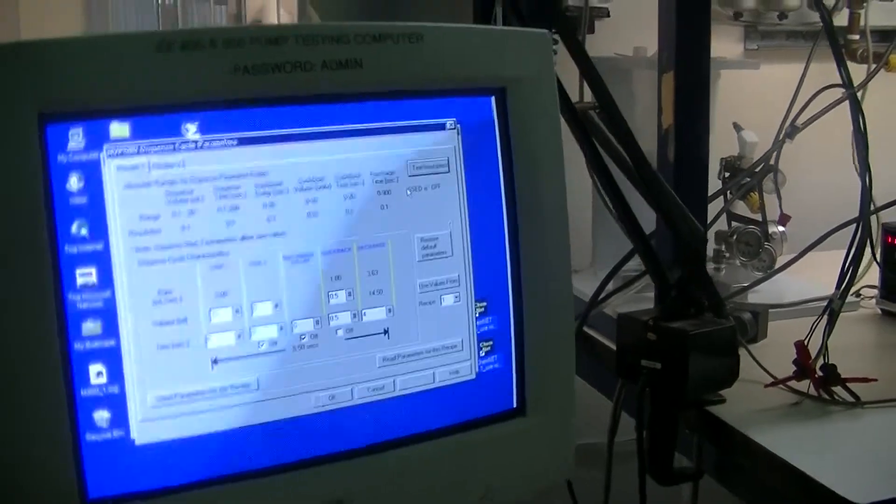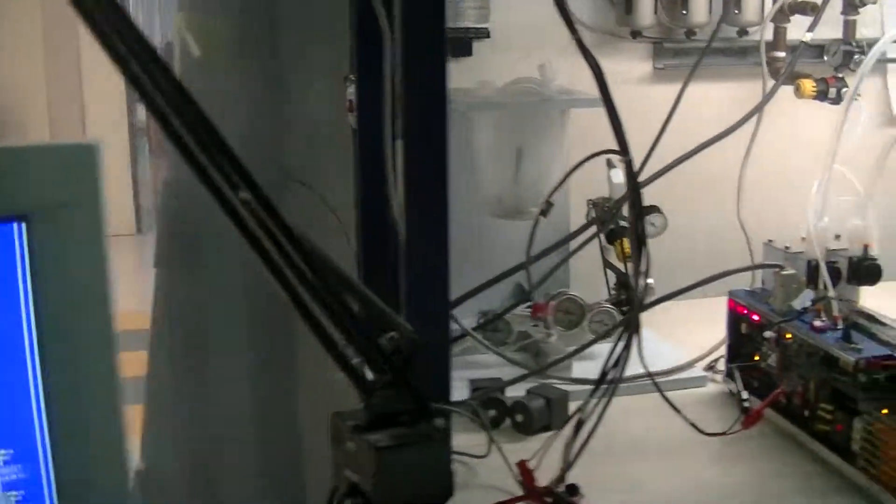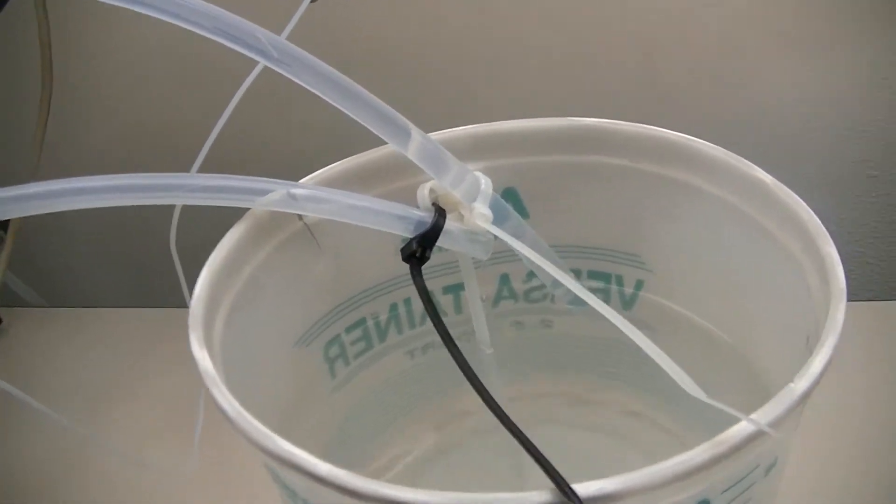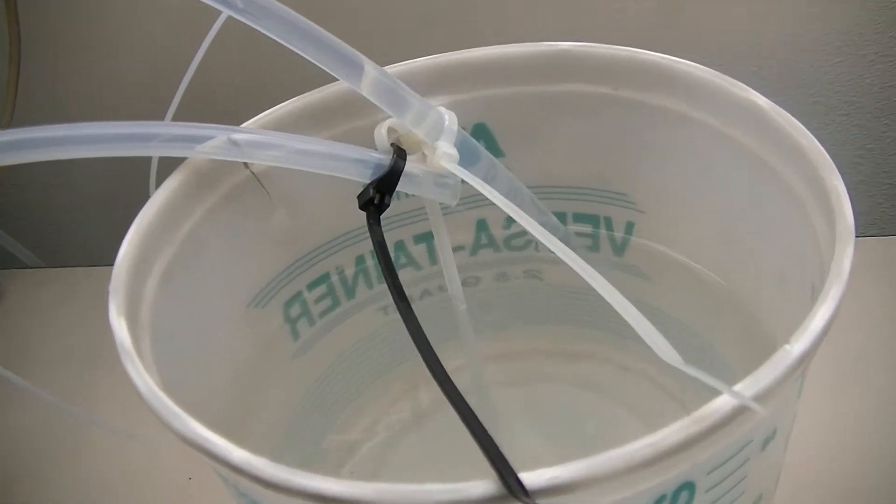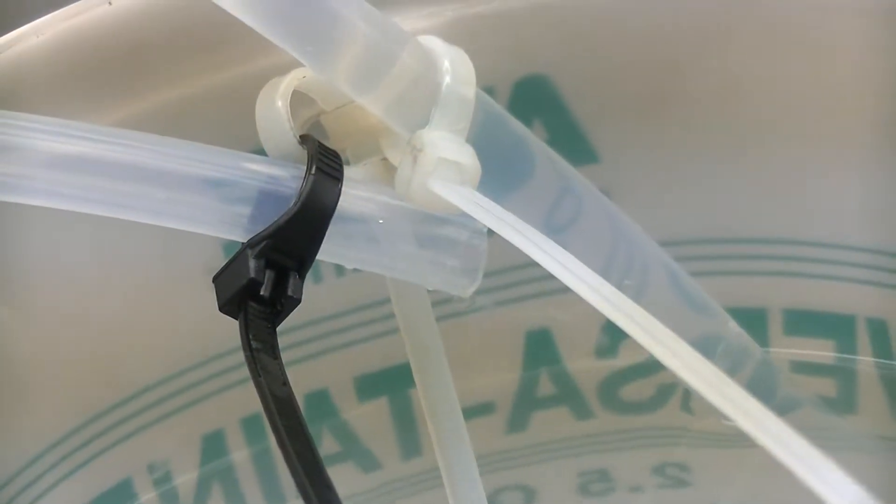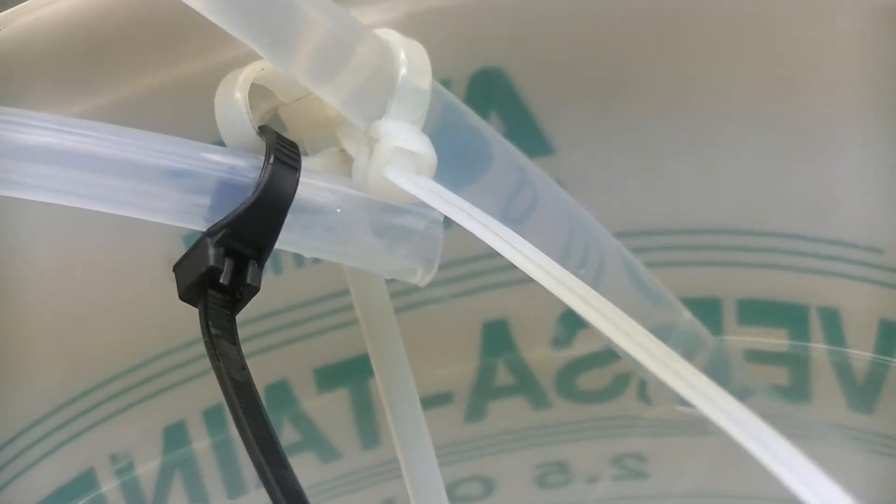And there it goes. Let me move the camera so you can see. What we'll do is I'll have Dave do a few dispenses and you zoom in on it so you can actually see the dispense. The tube with the black tie wrap is the dispense tube.